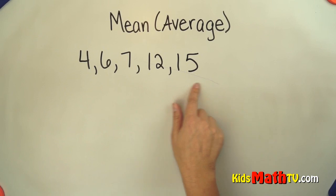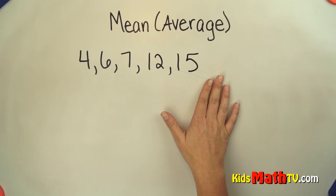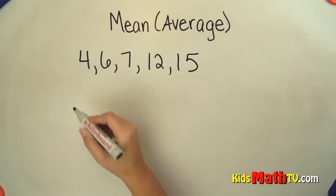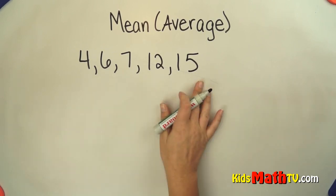So if we want to find the average of these numbers, we want to find one number that represents this whole set of numbers. To do that we simply add the numbers together and then we divide by the number in the set.